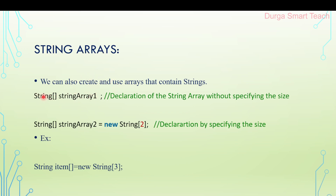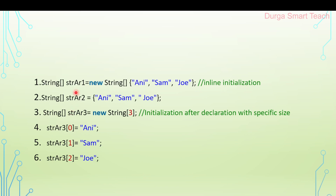To declare a string array, we use a one-dimensional array: the data type is String and the array name is, for example, 'string_array_one'. To create the memory: String string_name = new String[2]. For example, String item = new String[3] — here you can store three strings in one variable called item. This is known as inline initialization: declaration and initialization on the same line.